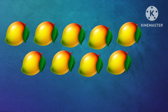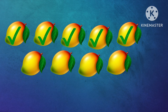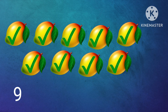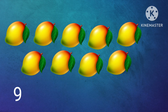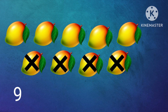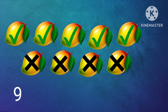How many mangoes are here? Shall we count? 1, 2, 3, 4, 5, 6, 7, 8, 9. There are 9 mangoes. In 9 mangoes we have taken 4 mangoes. So how many we have now? Shall we count? 1, 2, 3, 4, 5. There are 5 mangoes. So 9 minus 4 equal to 5.